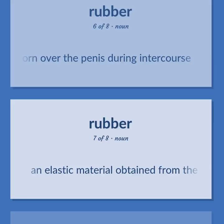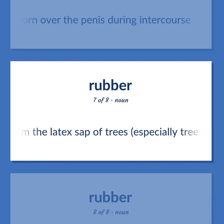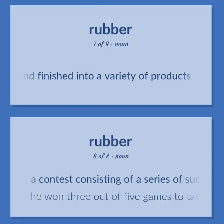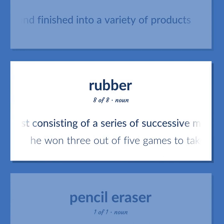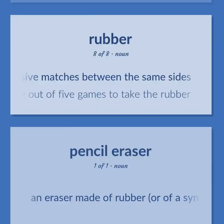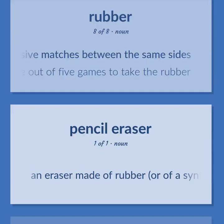An elastic material obtained from the latex sap of trees, especially trees of the genera Hevea and Ficus, that can be vulcanized and finished into a variety of products. A contest consisting of a series of successive matches between the same sides. He won three out of five games to take the rubber.